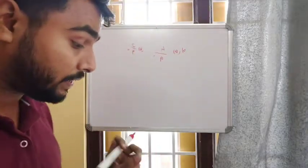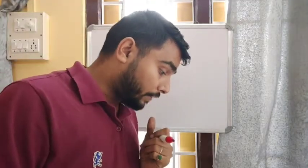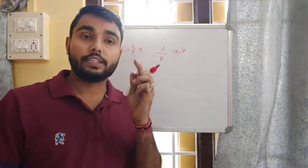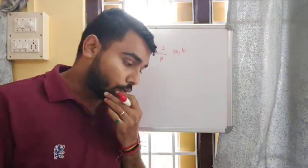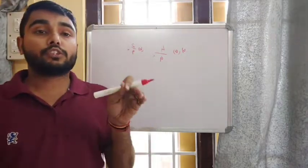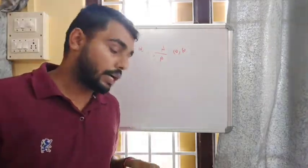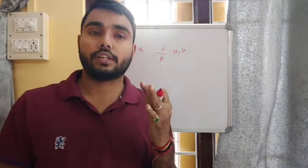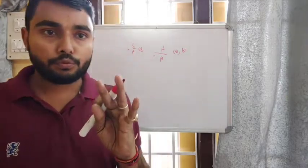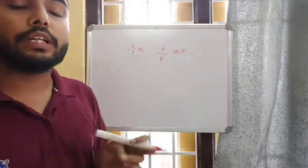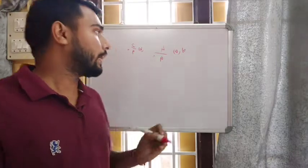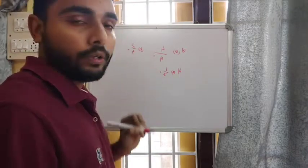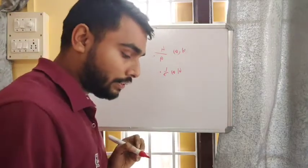Question number six involves a triangular spinner with numbers one, two, and three. When you spin it, it may stop at any of the three numbers, so there are three total possible outcomes. For number A, the probability of getting a one: only one outcome is in favor of one, so the probability is one by three.